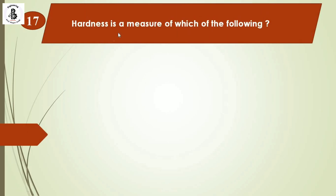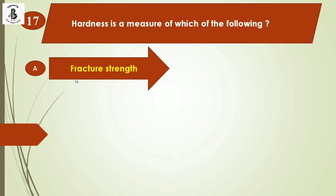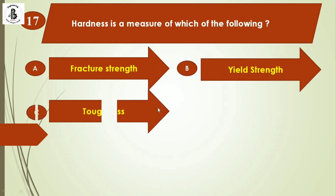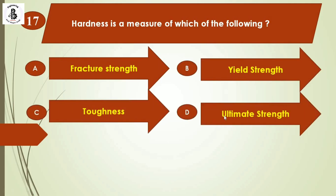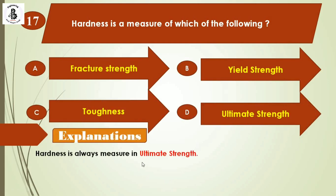Next question: Hardness is a measure of which of the following? Option A: fracture strength. Option B: yield strength. Option C: toughness. Option D: ultimate strength. Hardness is always measured in relation to ultimate strength. The right answer is option D.